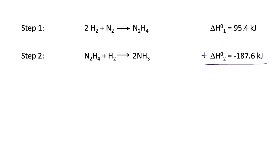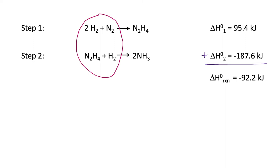What Hess's law tells us is that the overall reaction is found by adding up what happens in each of these steps. We can think of that two ways. The first way is to just add up the enthalpies of the steps—which is what Hess's law tells us we can do—and we get a standard enthalpy of reaction of minus 92.2 kilojoules. But what reaction is that an enthalpy for? We can figure that out by adding what's in these steps.